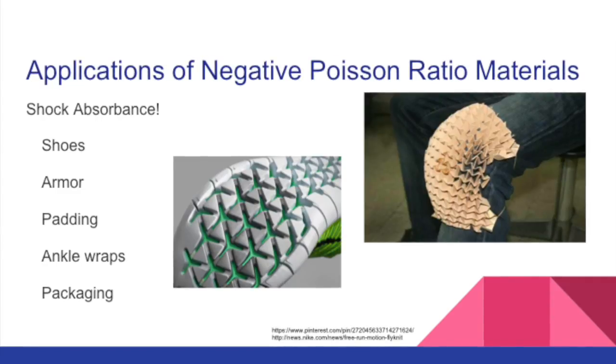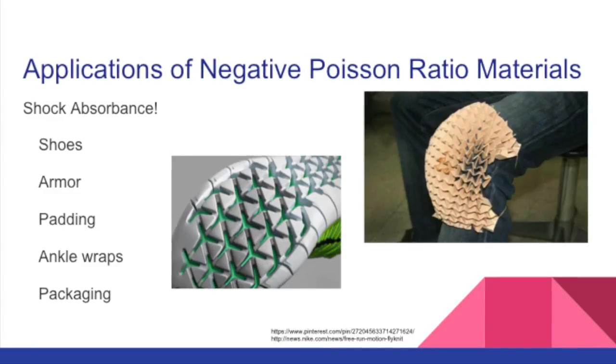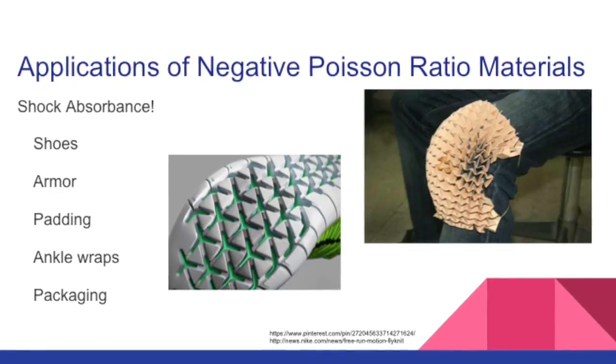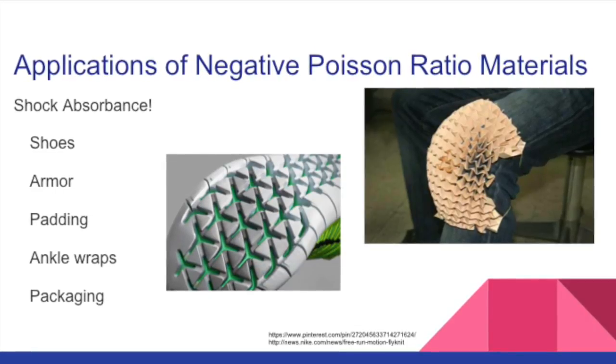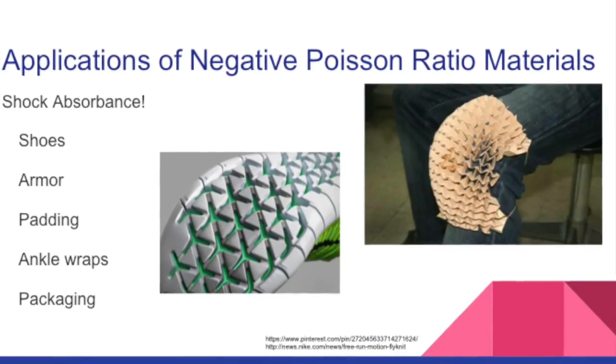Typical negative Poisson's Ratio materials can be created out of low density foams and rubbers, just by manipulating the geometry in which they are formed. They are especially applicable when creating pads and shock absorbers because they can form into dome shapes, unlike other materials.